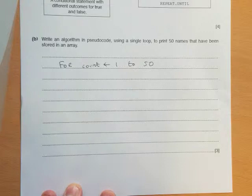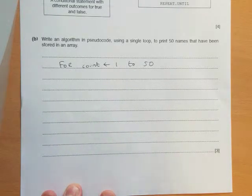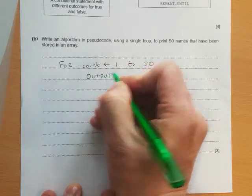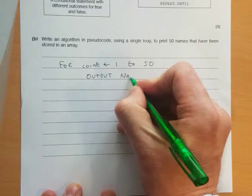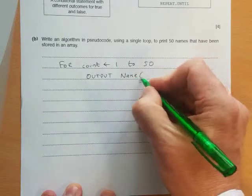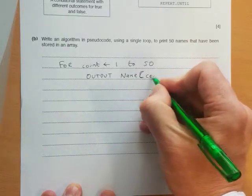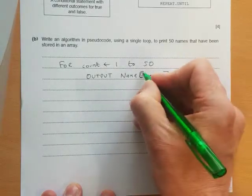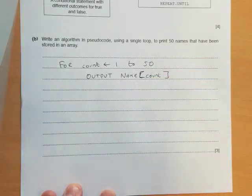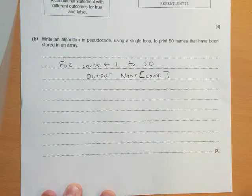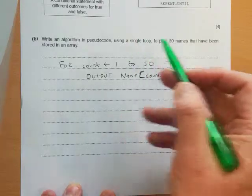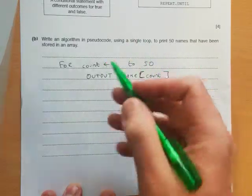Okay, so we've got our loop. What we're going to do is read each name from the array. So we output, and we'll say this is our array name[count]. We're using the square brackets to access the data from the array. That's what we need. We just need to print the name out. So that's it, that's our loop finished.